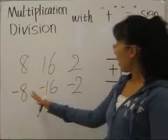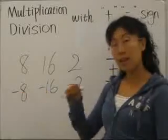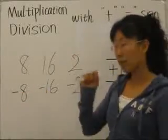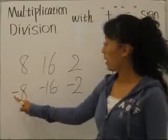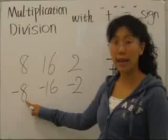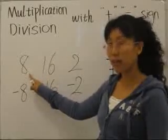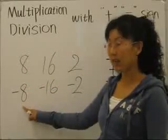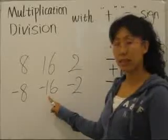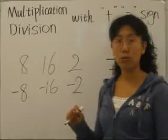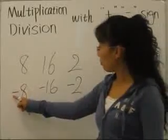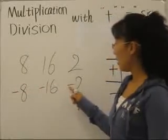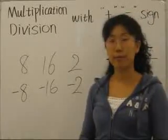And this minus line, a little line here, means negative sign. And this means negative 8, not positive 8, it's negative 8. And negative 16, and negative 2. And we have to put negative sign in front of a number, so that we know that's a negative number.